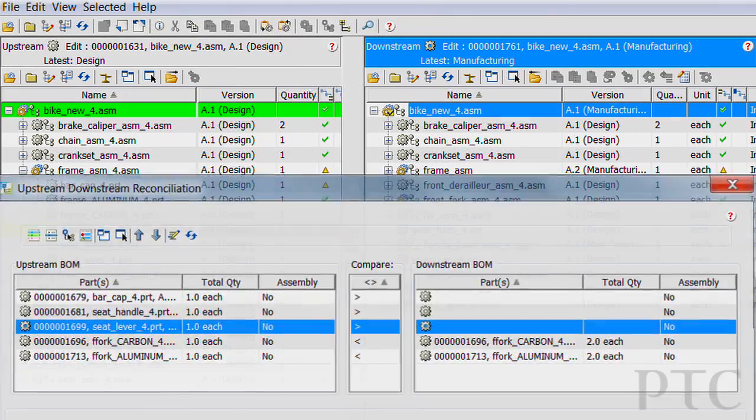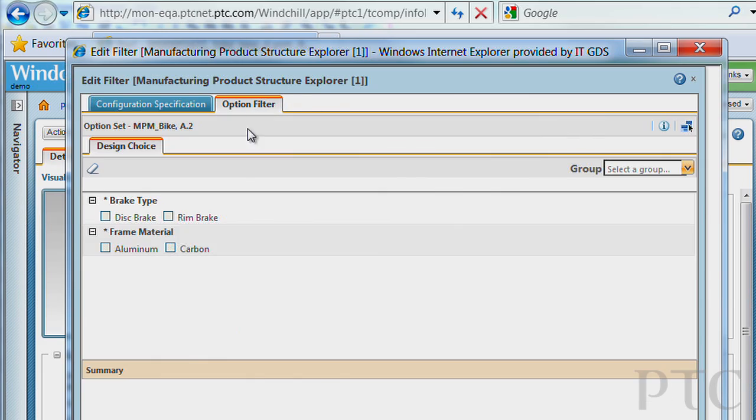Windchill 10.0 includes new capabilities to manage optional product information. These capabilities have been available to engineering with Windchill PDM Link, they're now available to manufacturing with Windchill MPM Link.